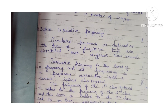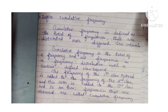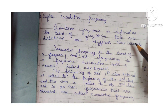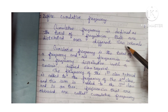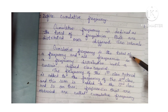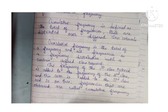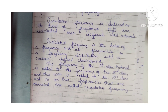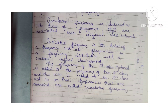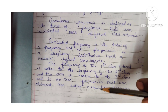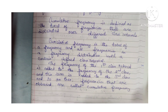Define cumulative frequency. Cumulative frequency is defined as the total of the frequencies that are distributed over different class intervals. It is the total of a frequency and all frequencies in certain defined class intervals. The frequency of the first class interval is added to the frequency of the second, the second to the third, and so on, till a particular level is obtained. Frequencies obtained in such a way are called cumulative frequency.